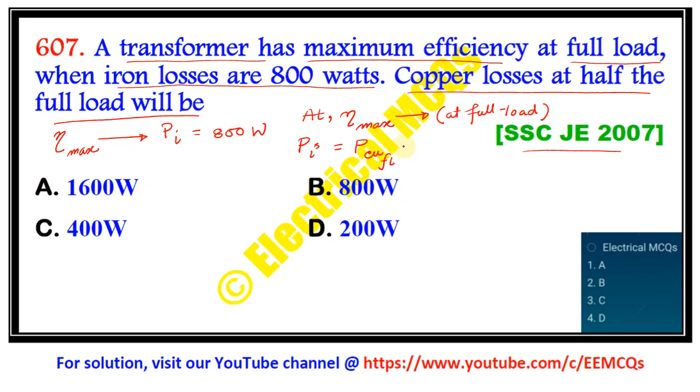This P_cu,fl, which is the copper loss at full load, is equal to 800 watts and can also be given by I_fl squared times R, where R is the resistance corresponding to the copper loss. Now we have to find out the copper losses when the transformer is at half the full load.